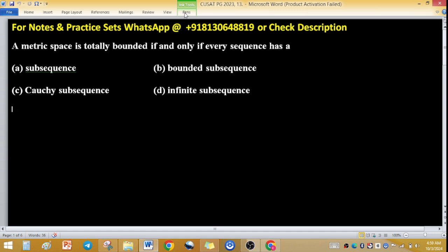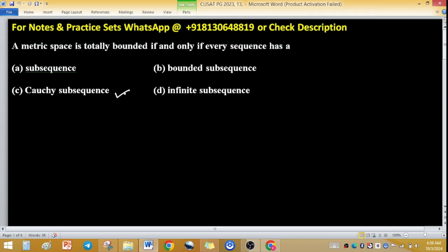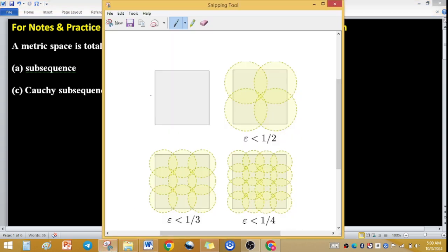Now the first thing is that we will see what the meaning of totally bounded is. Let's say that I have a metric space, which I can say is the [0,1] square. This square represents [0,1] square.